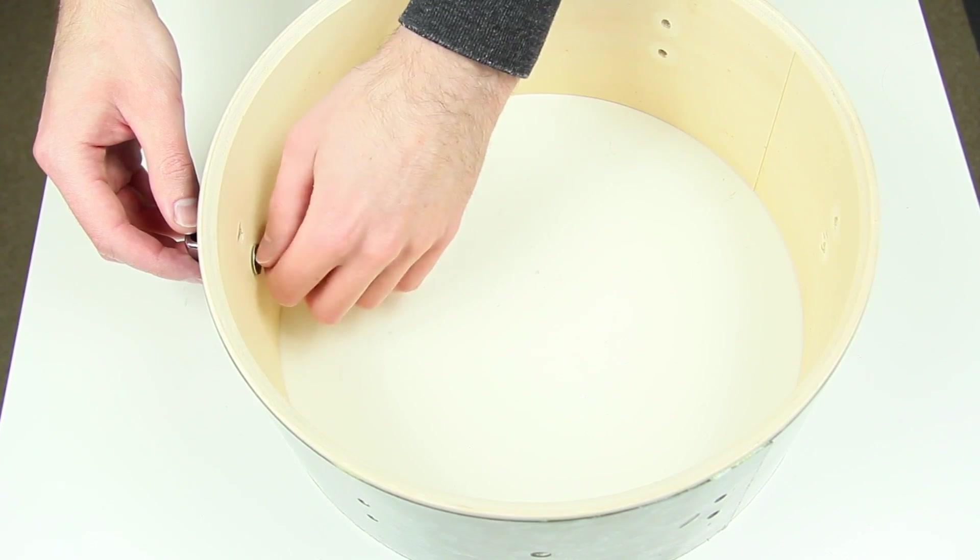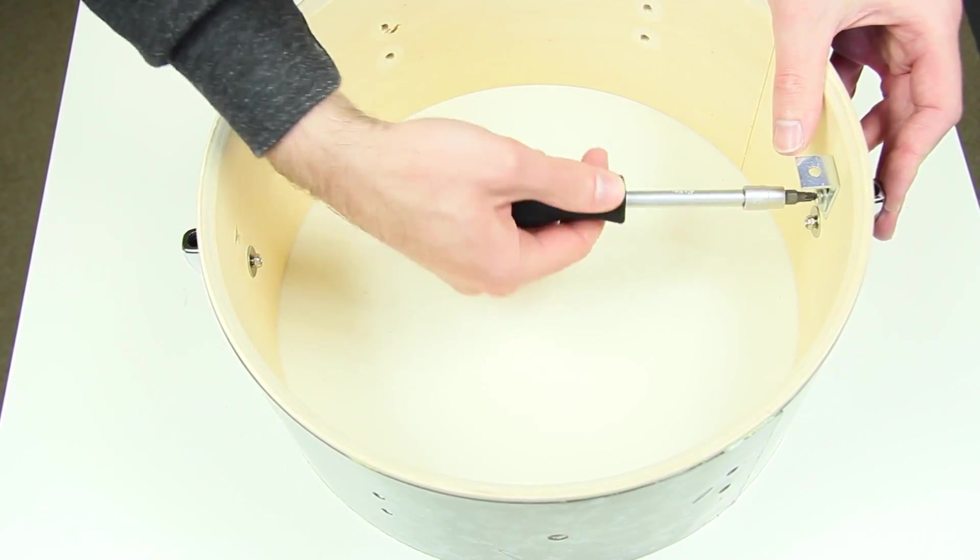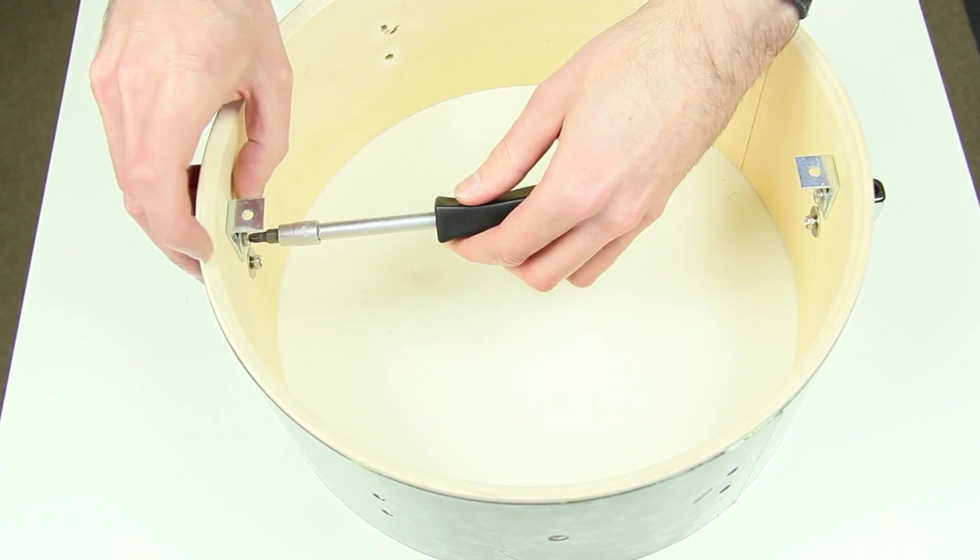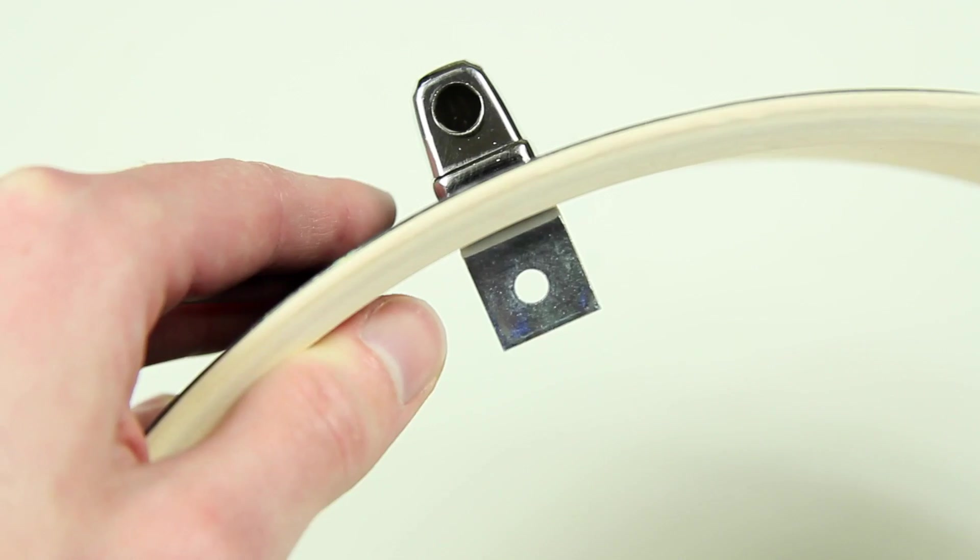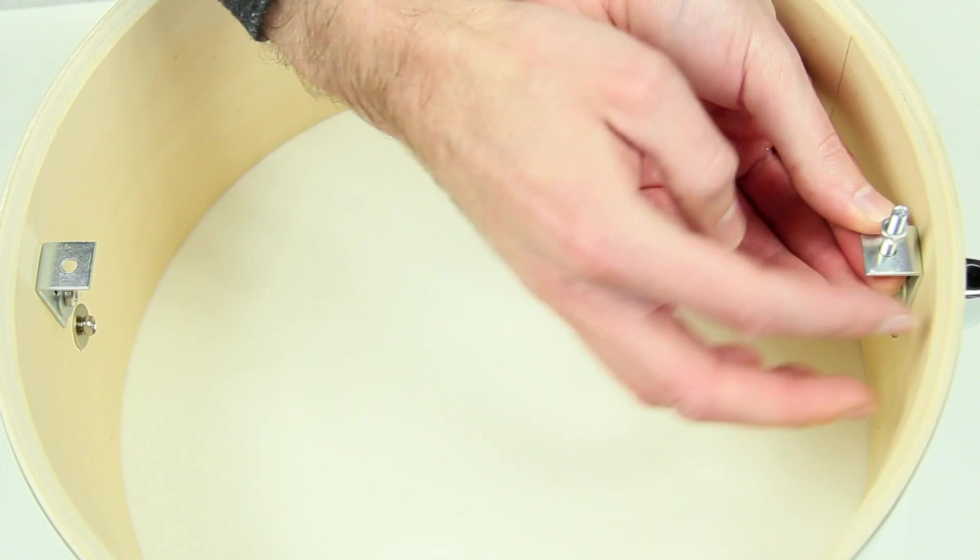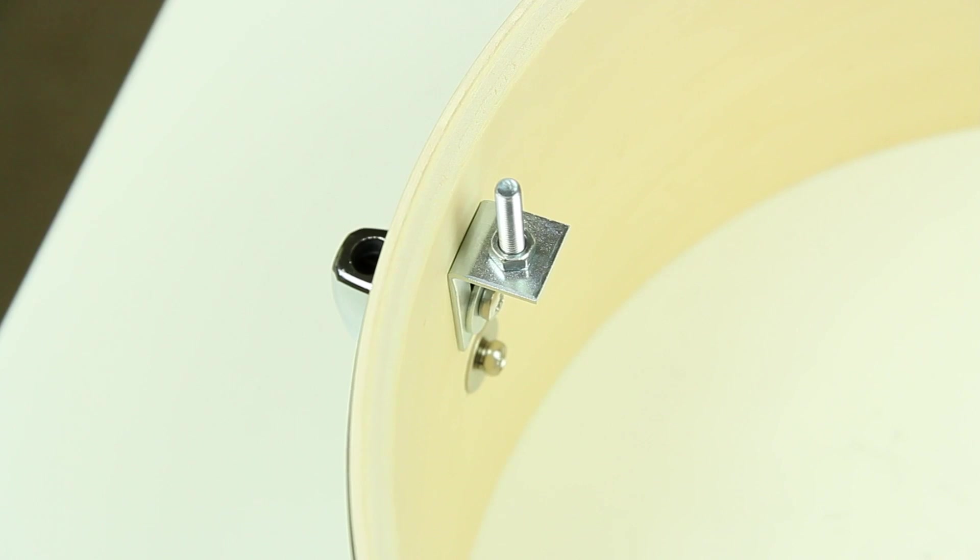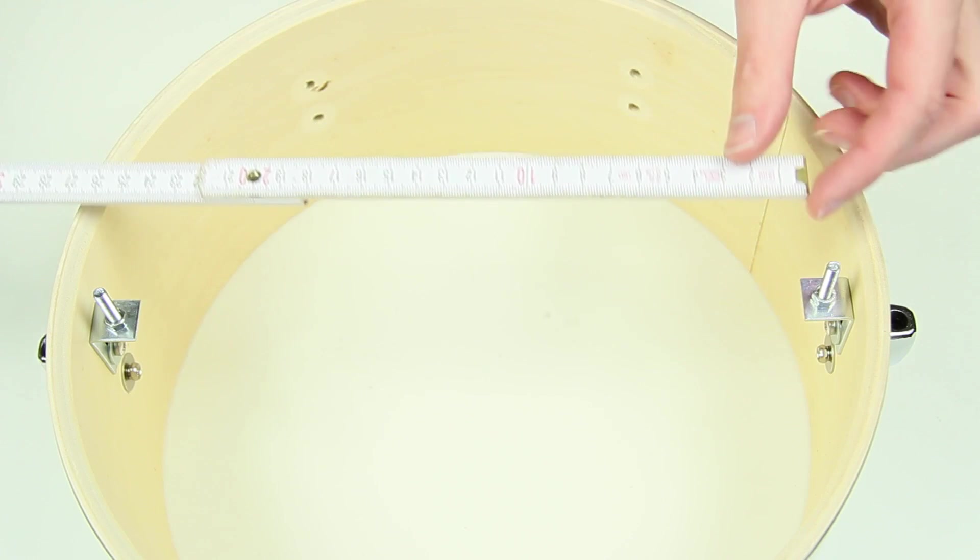Two lugs including metal angles need to be applied to be able to measure the exact diameter. The angles are from R-Drums. They get applied with M4 screws. We measure the distance between the screws and the inner shell diameter.